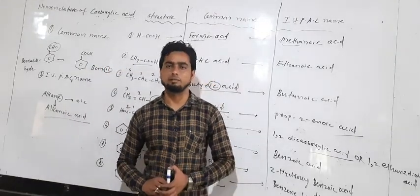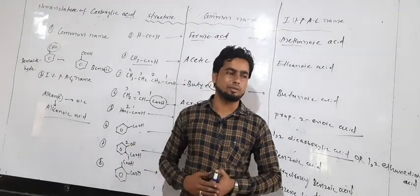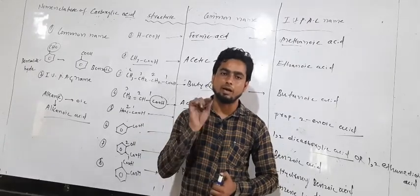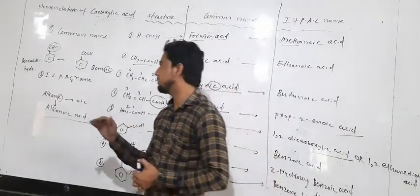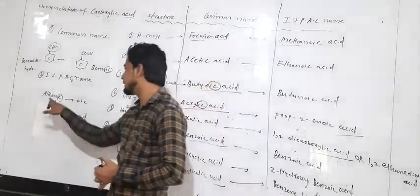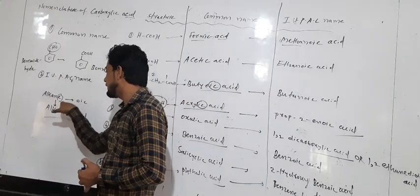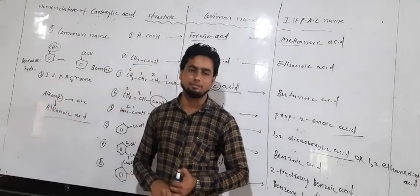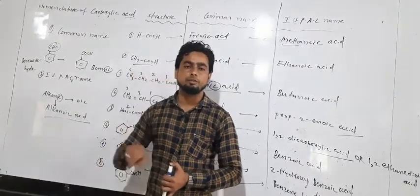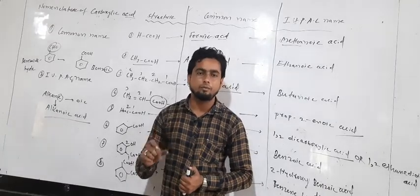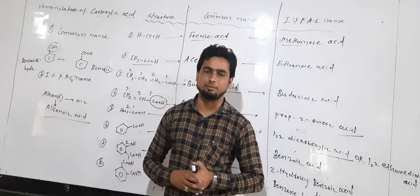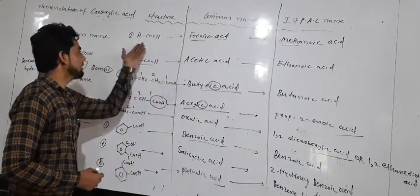Now, how to write the IUPAC name of carboxylic acid. In the IUPAC nomenclature system we follow some rules: first, select the longest chain; second, number the chain starting from the carbon to which the functional group is directly attached. In IUPAC naming, we replace the '-e' from alkane with '-oic acid' — so alkane becomes alkanoic acid. For example, one carbon is methane; replacing '-e' with '-oic' gives methanoic acid. Two carbons is ethane, giving ethanoic acid.